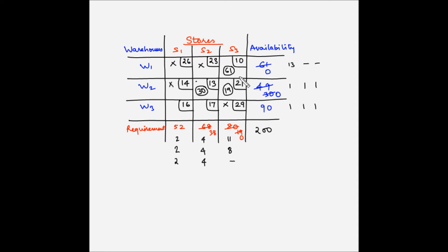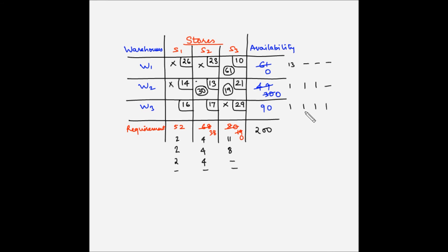We again find the differences. We skip the first and second rows as they are fully allocated. For the third row, 17 minus 16 = 1. For the first and second columns, only one cost remains in each so no difference can be calculated. Only row W3 has a valid penalty cost. We allocate the maximum units to the square with the lowest cost in row W3, which is W3S1.